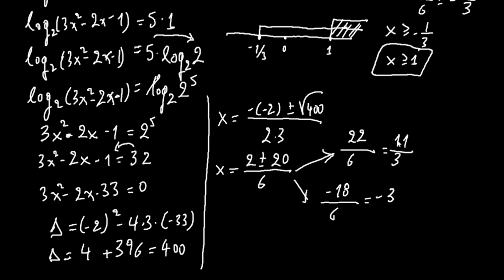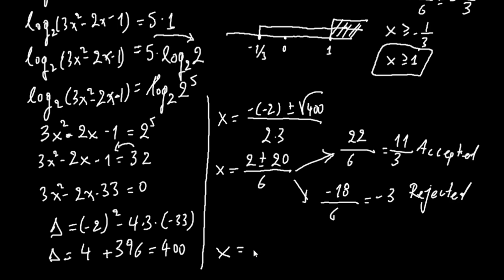Now we must check if these solutions are in the domain we found, where x must be greater or equal to 1. From these two solutions, only 11 over 3 can be accepted. Minus 3 is less than 1, so we must reject it. So our only solution is x equals 11 over 3.